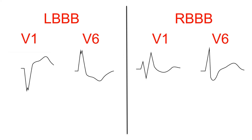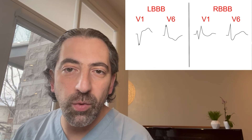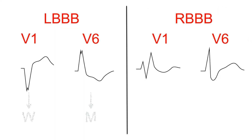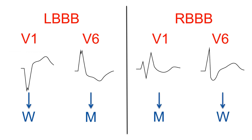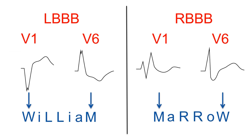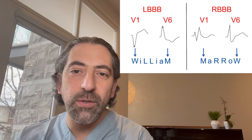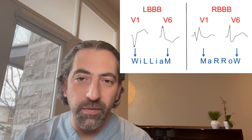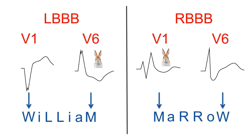Here is a mnemonic to remember how the QRS complexes look in left bundle branch block and right bundle branch block. In left bundle branch block, V1 looks like a W and V6 looks like an M. In right bundle branch block, V1 looks like an M and V6 looks like a W. The mnemonic is WiLLiaM MaRRoW — the first letter indicates V1, the last letter indicates V6, the L in WiLLiaM refers to left bundle branch block, and the R in MaRRoW refers to right bundle branch block. Another way to remember: right bundle branch block gives you rabbit ears in lead V1.